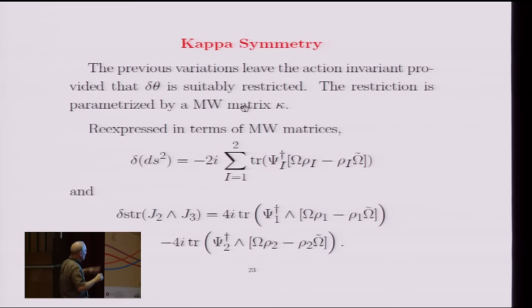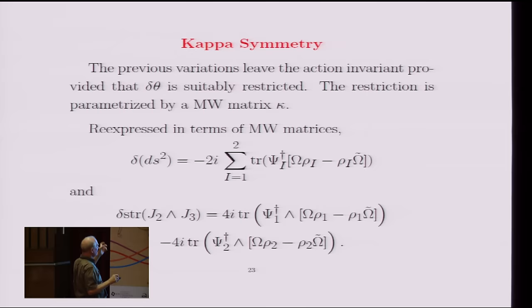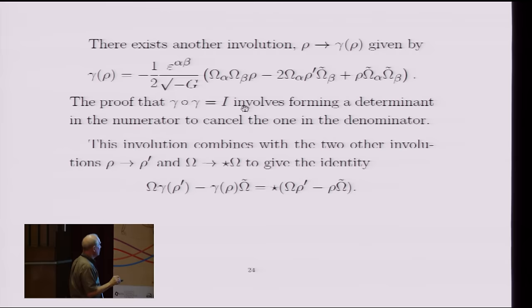So I'd use theta variation to get these additional equations of motion, but there are certain theta variations which don't give equations of motion, they just leave the thing invariant. And those are the kappa symmetry transformations, and I don't have time to explain that, so you'll have to read my forthcoming paper to find out how that works.